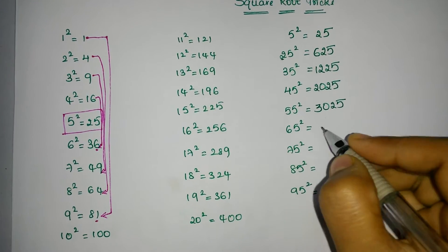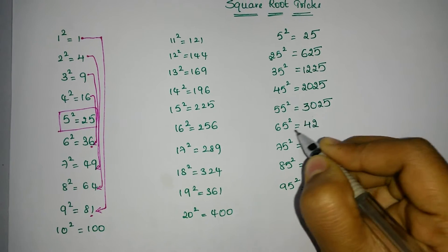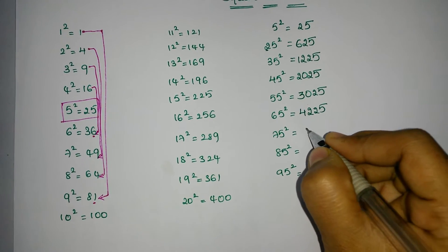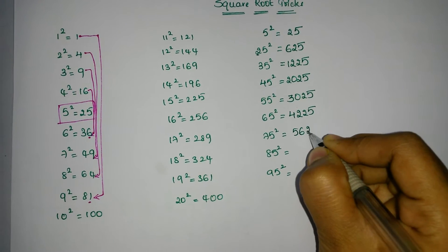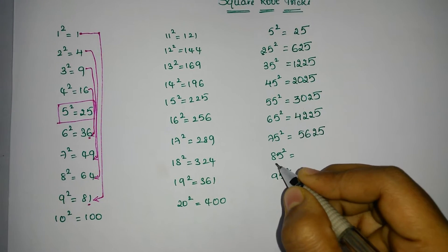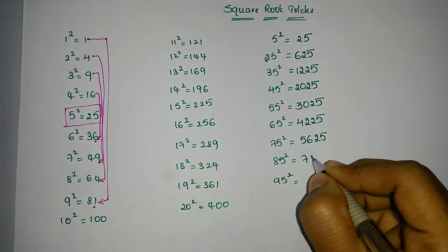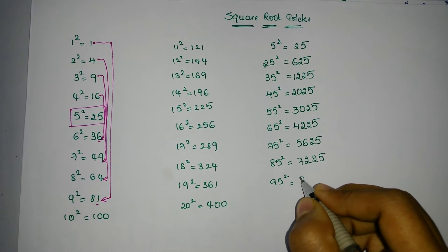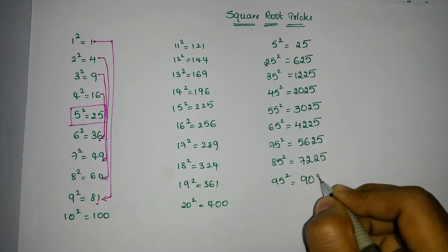Next, 6 times 7 is 42 and 5 square is 25. Next, 7 times 8 is 56 and 5 square is 25. 8 times 9 is 72 and 5 square is 25. In the same way, 9 times 10 is 90 and 5 square is 25.